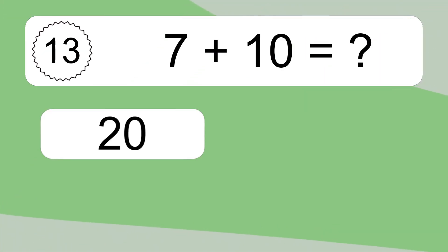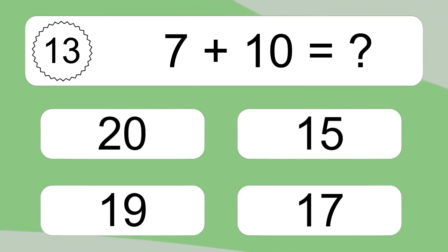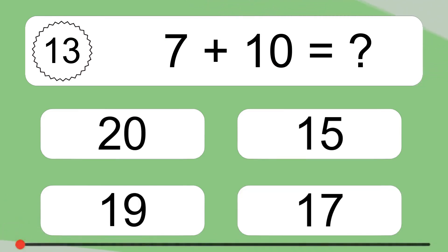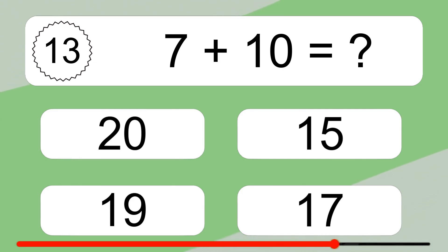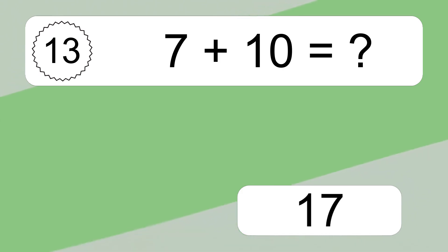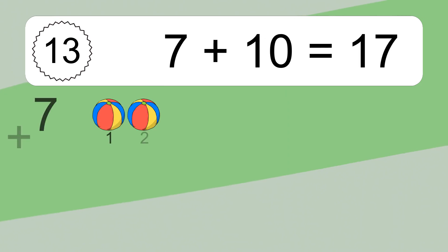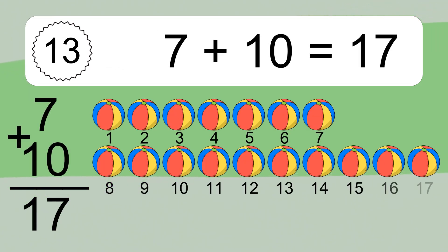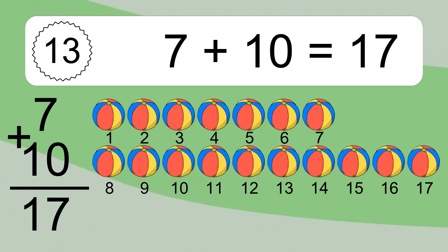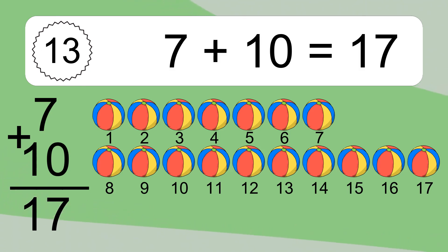7 plus 10 equals what? 7 plus 10 equals 17. Let's count it: 1, 2, 3, 4, 5, 6, 7, 8, 9, 10, 11, 12, 13, 14, 15, 16, 17.